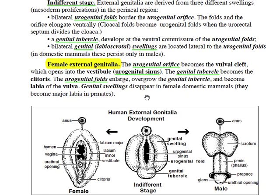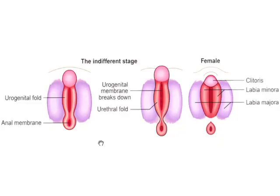This textbook image shows early to later stages of female genital development. The earliest stage shows the caudal end of the urogenital sinus beginning to separate from the earlier cloaca, with a cloacal membrane evident and a genital tubercle appearing ventrally. With further differentiation, the urogenital sinus separates from the anal canal and the remnants of the cloacal membrane disintegrate. Ultimately, the genital tubercle becomes the clitoris, the urogenital folds become labia bordering the vulva cleft that leads to the vestibule, and the genital swellings disappear in domestic mammals, though in women they become labia majora.